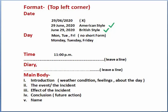After writing the time, you should leave a line. Then, after leaving a line, write the word 'Diary' followed by a comma. At this point, students should be especially cautious because students usually commit a mistake here. Instead of writing 'Diary', they write 'Dear Diary' — that is a wrong step. You should not write 'Dear Diary'. You should only write 'Diary' and then a comma. After writing 'Diary,' leave a line, and then your main body starts.